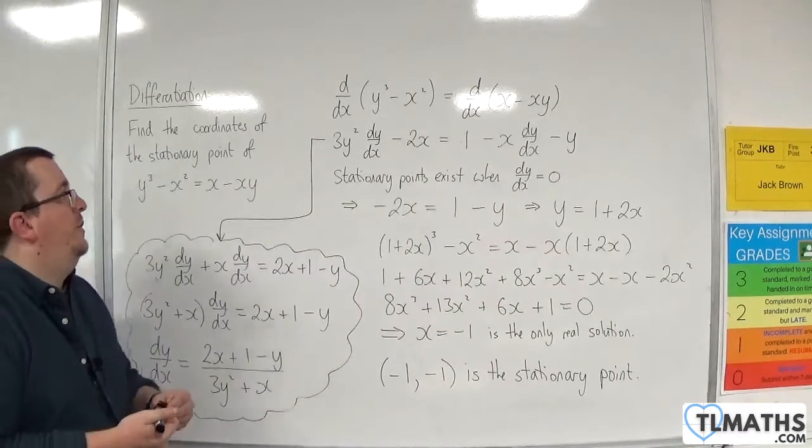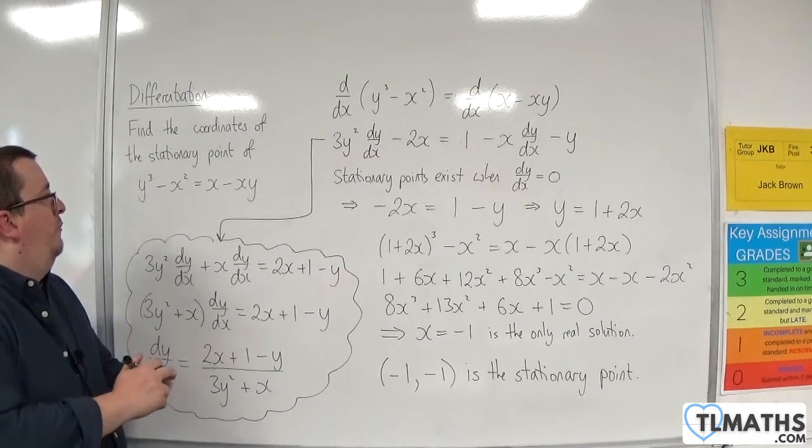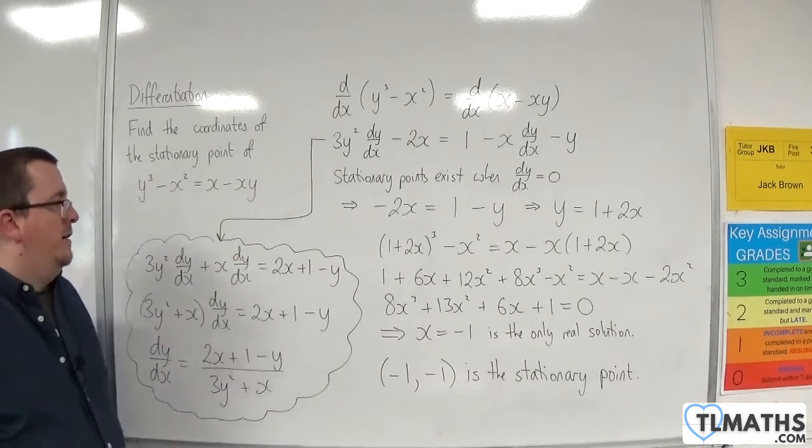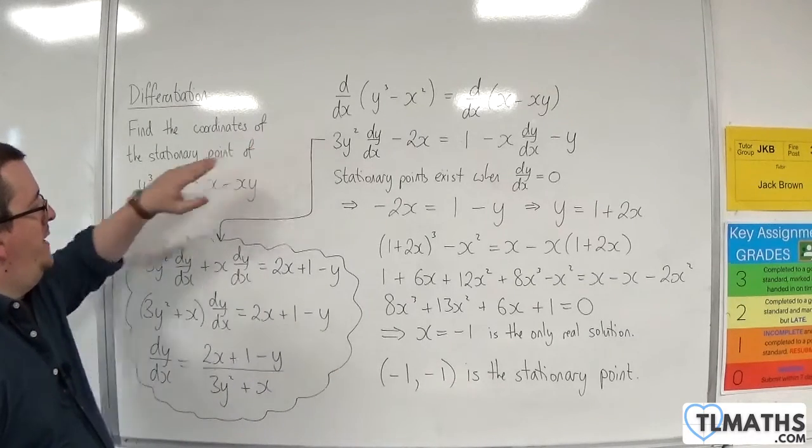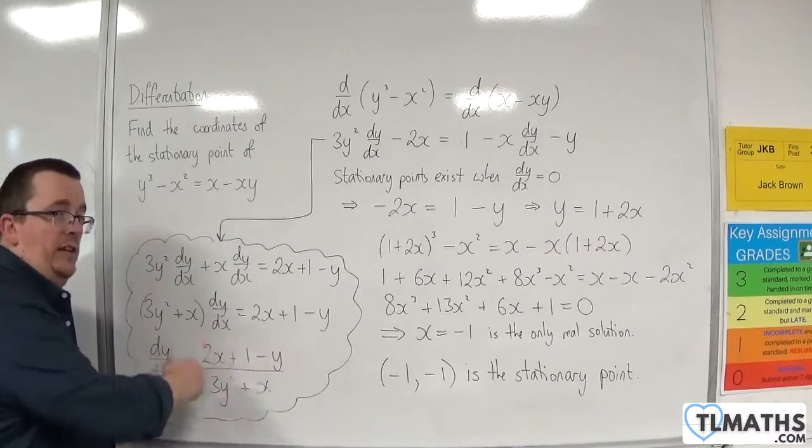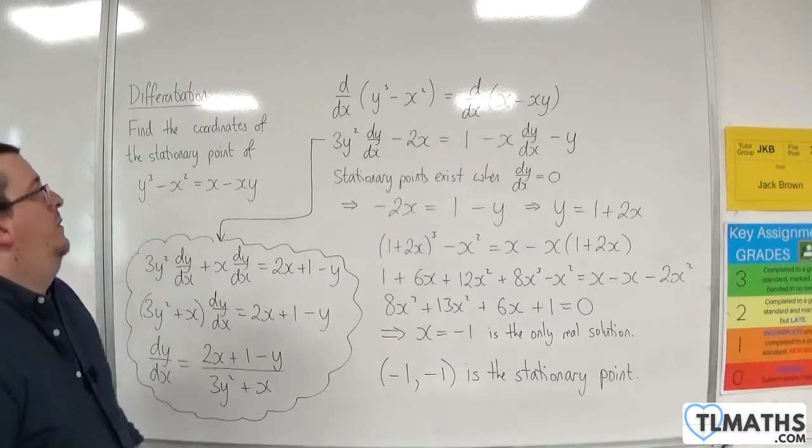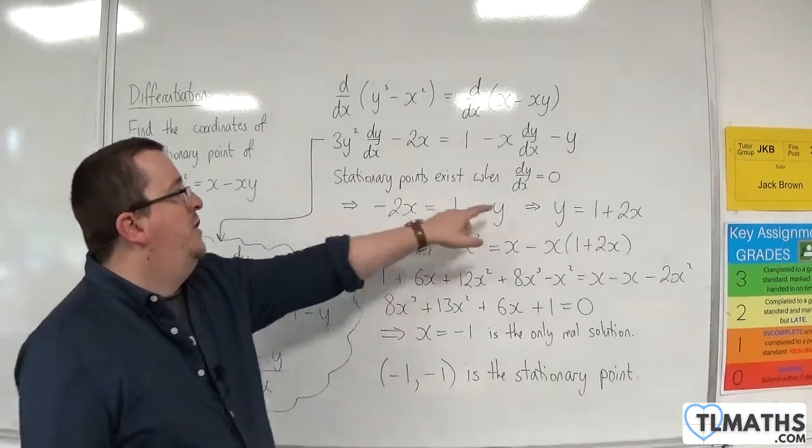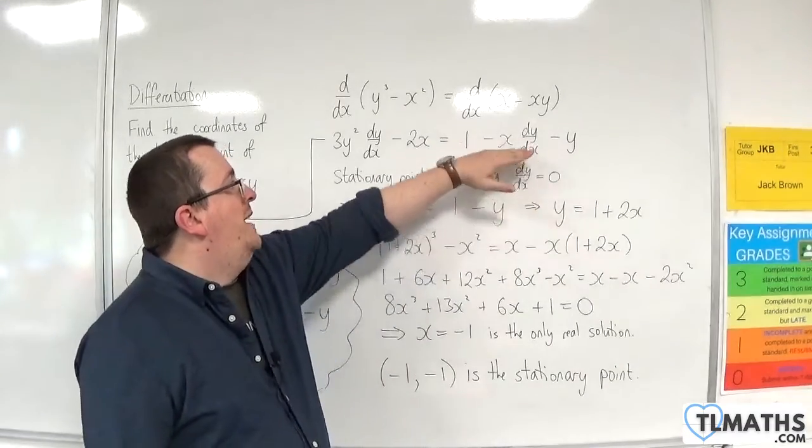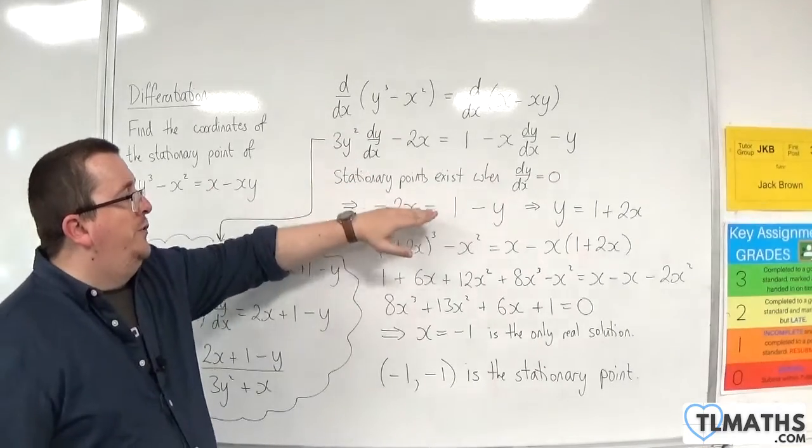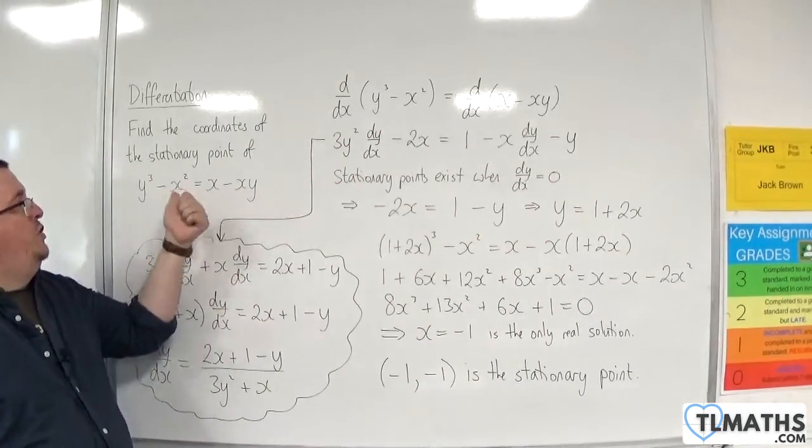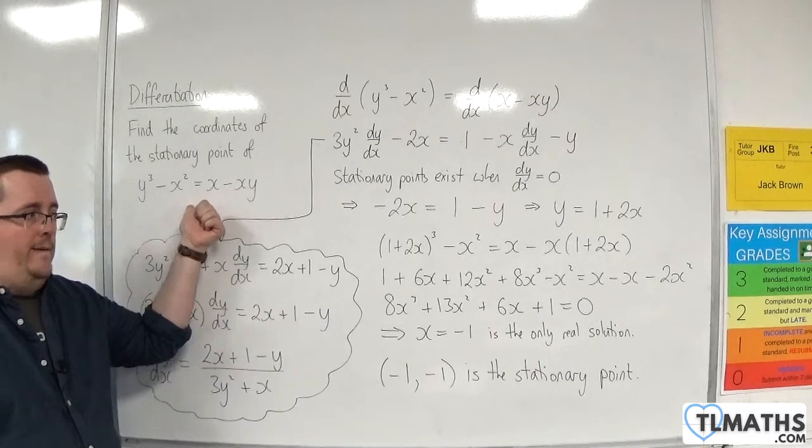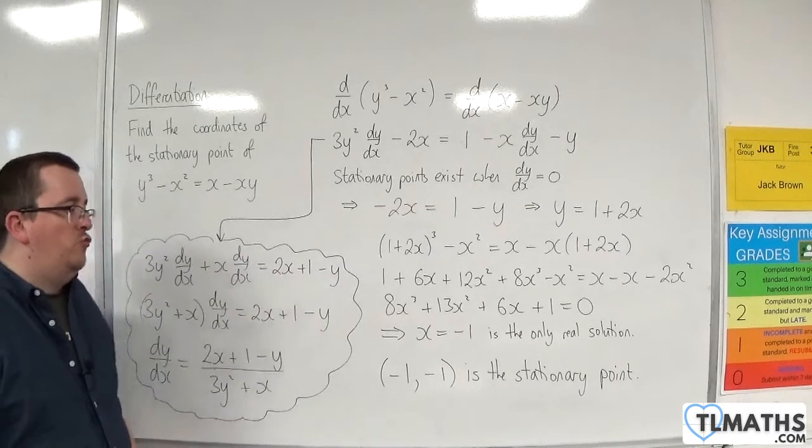And so, that is how we can find the stationary point of an implicit curve. So, you can either go down the route, once you've differentiated, find dy/dx and use that. Or, if you're just finding stationary points, you can just substitute dy/dx = 0 straight in. And then solve the resulting equation. And then substitute it back into the original curve to work out where that stationary point is.